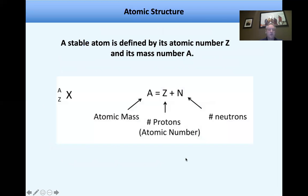So atomic structure. So we know the Bohr atom basically explained the atom in an analogous manner, the solar system with the planets and the sun. And so a stable atom is defined by its atomic number Z and its mass number A, and here's what it looks like over here. And so we have atomic mass equals the number of protons plus the number of neutrons. I think we all know that.